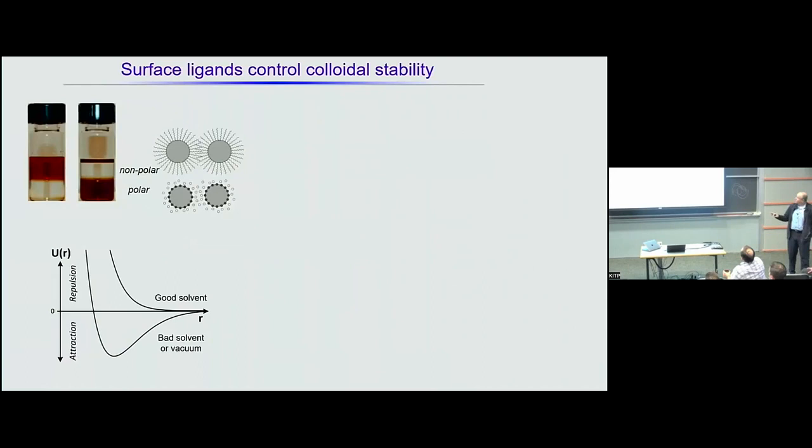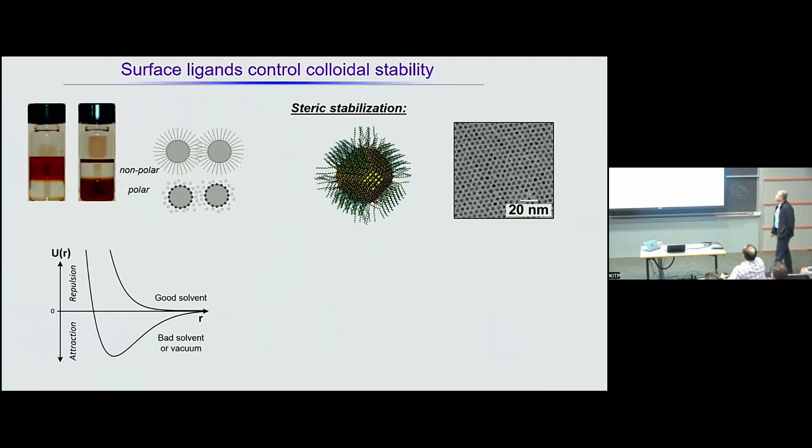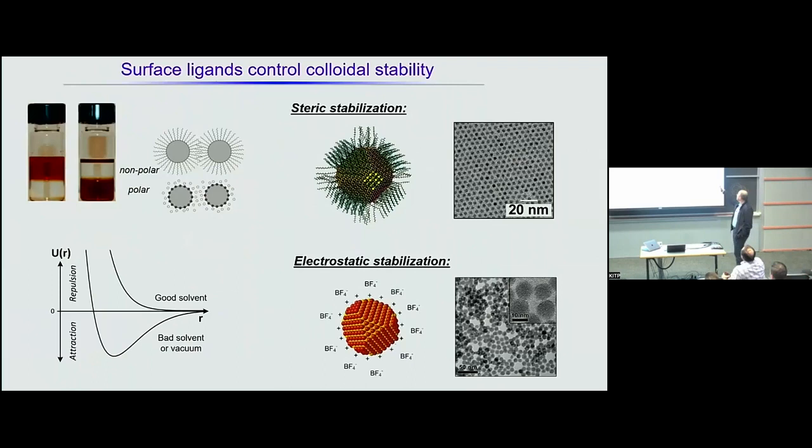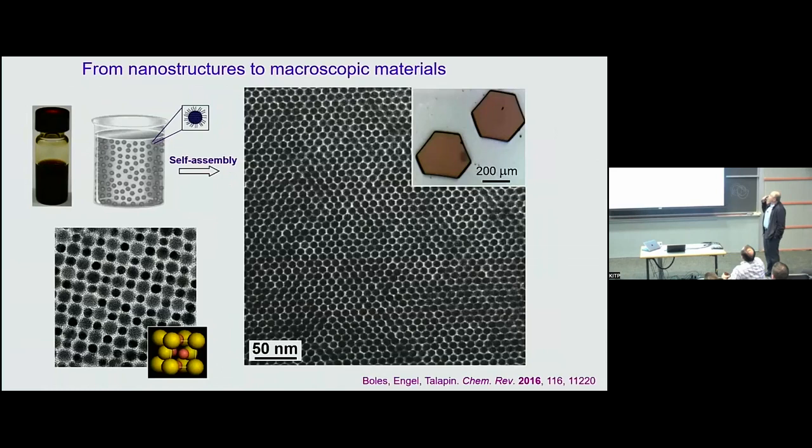To make colloidal assemblies, we need colloidal solutions where particles have repulsive potentials. There are two ways to implement repulsive potentials: steric stabilization and electrostatic stabilization. Steric works particularly well in non-polar solvents, while electrostatic works in highly polar solvents. So far, the majority of work showing beautiful assemblies has been done with sterically stabilized particles and DNA stabilized particles.